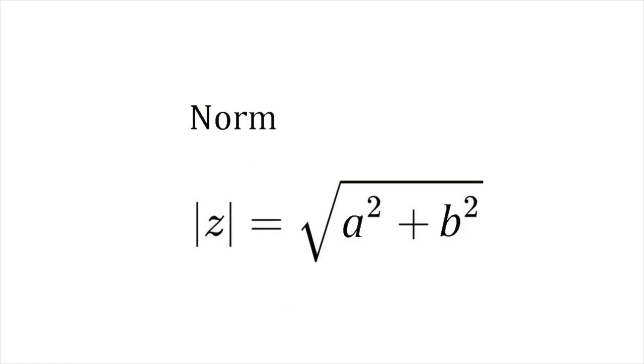The norm of z is defined as the square root of a squared plus b squared. So, the norm squared is a squared plus b squared, which is equal to z times z-star.